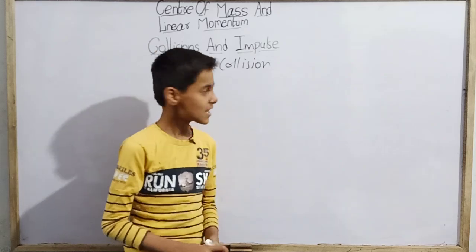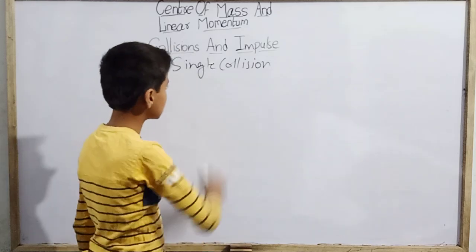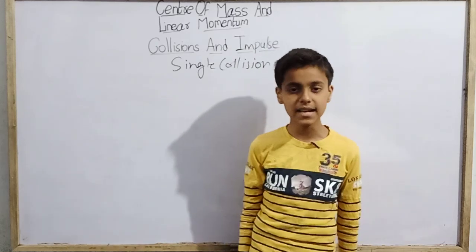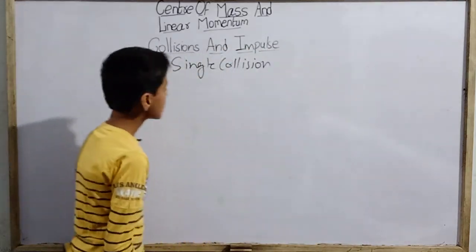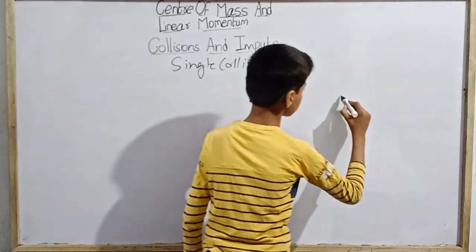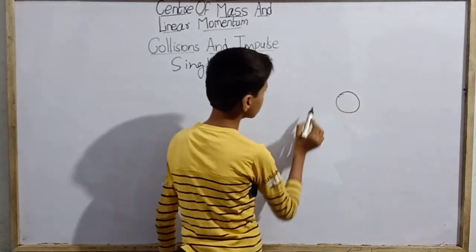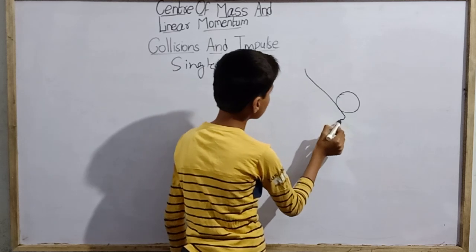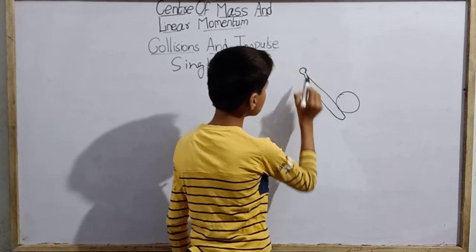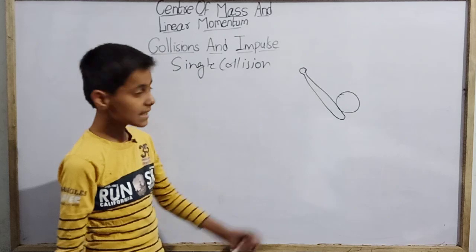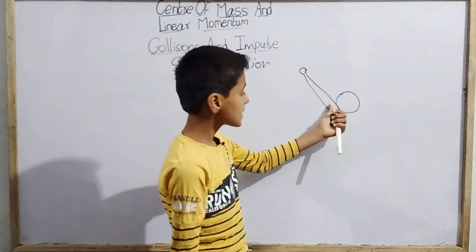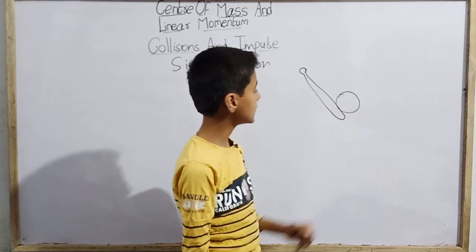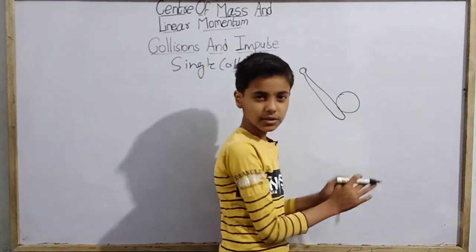This is a single collision. Starting with an example — suppose I draw something here: I have a baseball and a bat. I strike a ball with this kind of thing. So first, the ball will be elastic.